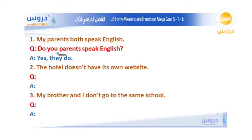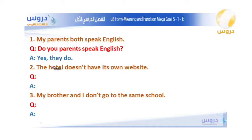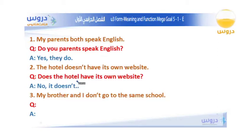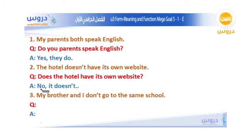The next statement: The hotel does not have its own website. Since 'hotel' refers to the pronoun 'it,' we use does. The question is: Does the hotel have its own website? Since this is a negative statement, we answer: No, it does not.